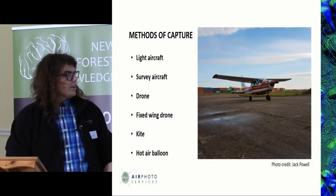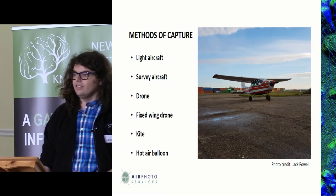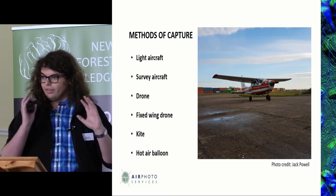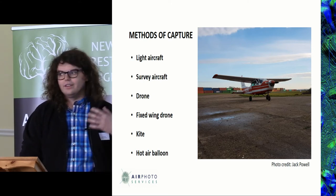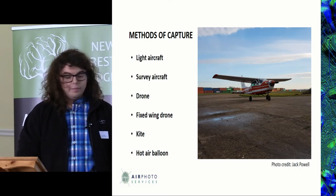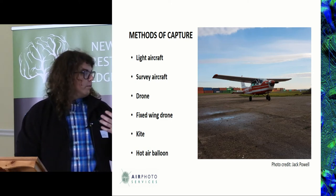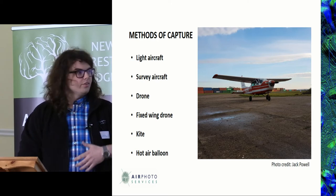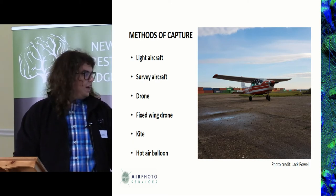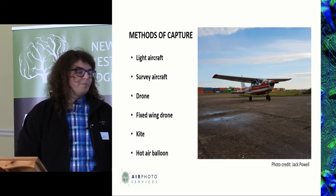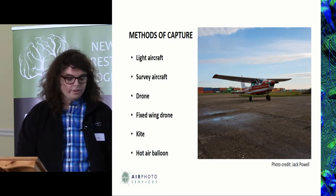There are quite a few methods to capture aerial photos. The most commonly known is in a light aircraft with someone looking out of the window. We also have bespoke survey aircraft like the Environment Agency and Ordnance Survey bespoke photos from the 1940s. More recently we have drones and fixed-wing drones photographing the landscape, and we can also have kite photography — some of the earliest air photos were taken from hot air balloons, including the first aerial photo of Stonehenge.